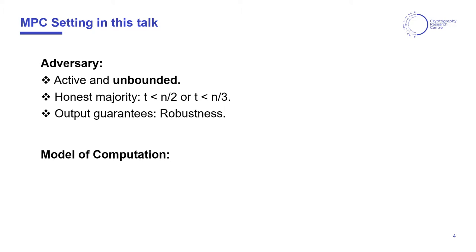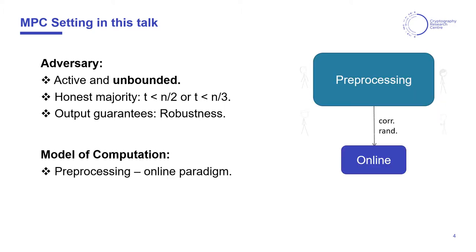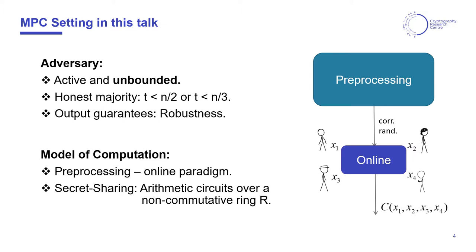And in terms of the model of computation, we will follow the offline-online paradigm or preprocessing-online paradigm. We will base our results on secret sharing over a non-commutative ring R. So this allows us to compute arithmetic circuits over a non-commutative ring R.